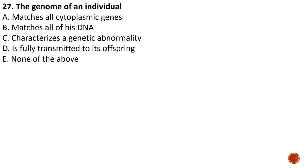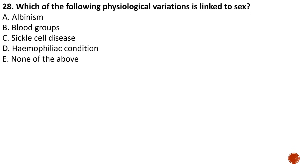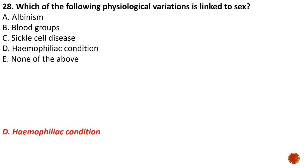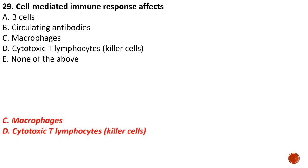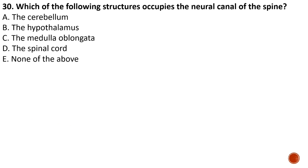Question number twenty-seven: the genome of an individual — A) matches all cytoplasmic genes, B) matches all his DNA, C) characterizes genetic abnormality, D) is fully transmitted to his offspring. The correct answer is B — it matches all of his DNA, which is the definition of a genome. Question twenty-eight: the physiological variation linked to sex is D — hemophilia. Question twenty-nine: cell-mediated immune response involves macrophages and cytotoxic T lymphocytes, the killer cells. Question thirty: the structure occupying the neural canal of the spine is the spinal cord, answer D.